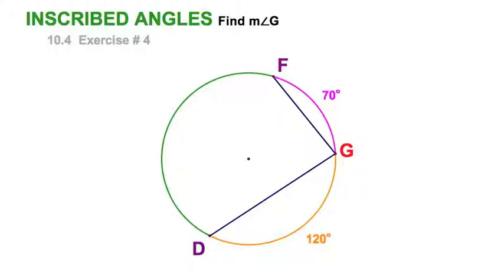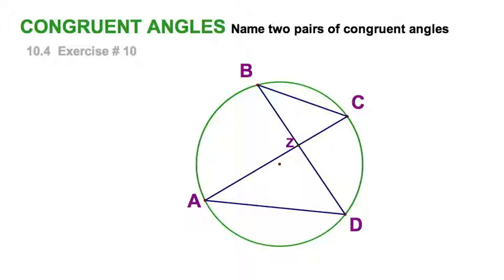Let's apply our inscribed angle theorem to this problem, and this is number 4 in your exercises, section 10.4. I've got two given arcs here, and I'm looking to find measure of angle G, which is inscribed. Clearly, the first thing I need to do is find this arc, the green arc. That's easily enough. I take away from 360 the 70 and the 120. I now have an arc of 170 degrees, and then simply take half of that, and the measure of angle G is 85 degrees. The inscribed angle is equal to one-half the measure of its intercepted arc, and we're done.